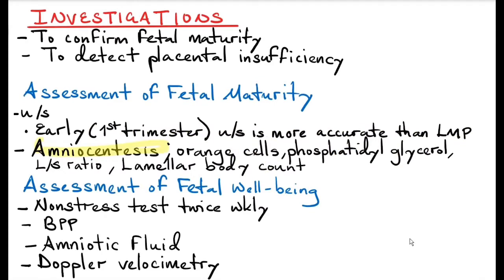Amniocentesis is another way of assessing fetal maturity, done in facilities where the equipment is available. You assess the amniotic fluid and look for orange cells, which are desquamated fetal cells. If you find more than 50% fetal cells, this indicates fetal pulmonary maturity. You can also assess for phosphatidylglycerol and lecithin-sphingomyelin ratio, which indicates pulmonary maturity. Lamellar body count is the storage form of surfactant in the amniotic fluid — if you find more than 30,000 lamellar bodies, it indicates pulmonary maturity.